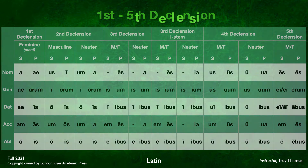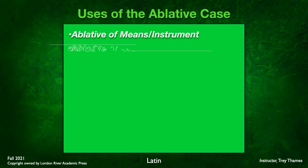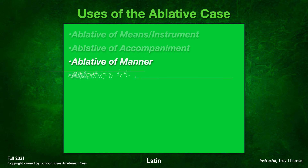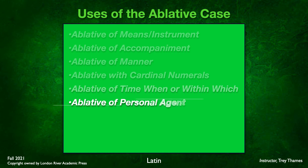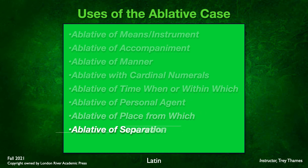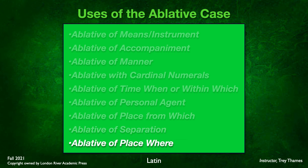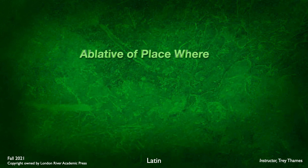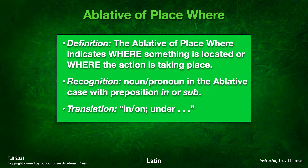Let's take a look at the last part of this lesson — one more additional use of the ablative case. We have run through a bunch of uses of the ablative over the last several weeks: the ablative of means, accompaniment, manner, with cardinal numbers, time when or within which, personal agent, place from which, and separation. This week we'll be looking at the ablative of place where. The definition is that the ablative of place where indicates where something is located, or where the action is taking place. You'll recognize it because you'll see a noun or pronoun in the ablative case with the preposition in or sub.